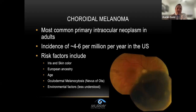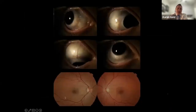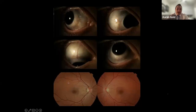If patients have nevus of Ota — oculodermal melanocytosis — they have a much higher chance of developing melanoma, about one in 300 to one in 400 depending on the source literature. Regarding environmental factors, UV plays a huge part in cutaneous melanoma, but when it comes to ocular melanoma, the choroid is where melanomas occur 80% of the time, and the lens protects the choroid compared to, say, the iris. So we don't think UV plays as large a role, though there are competing studies.